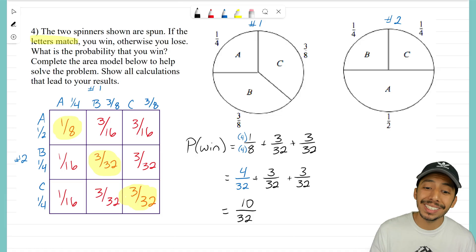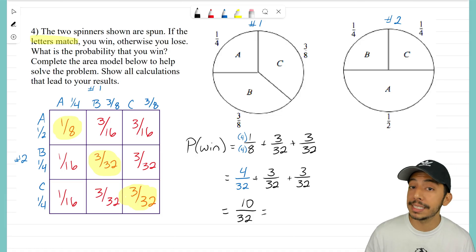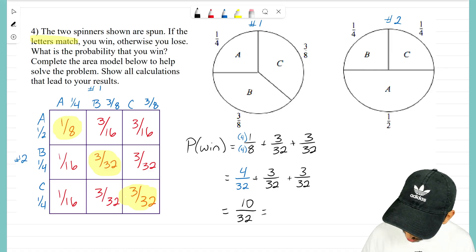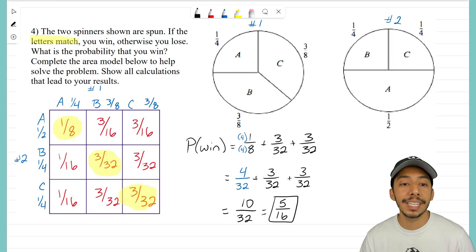But let's reduce when we can. I think 2 goes into 10 and 32. 2 goes into 10 five times, 2 goes into 32 sixteen times. So we'll write it out this way: the probability of you winning is 5/16.